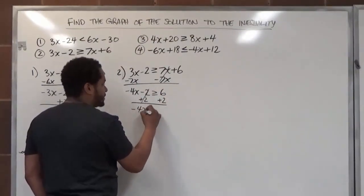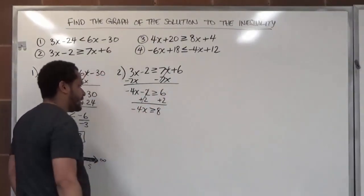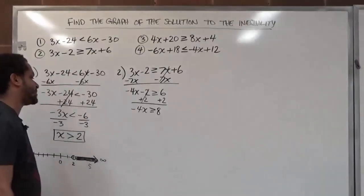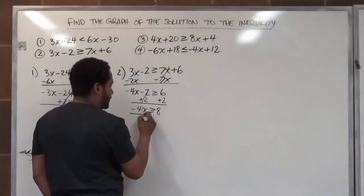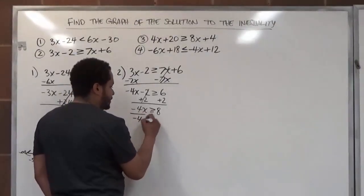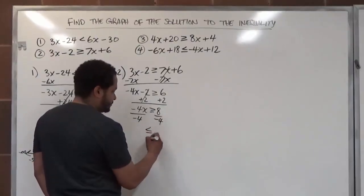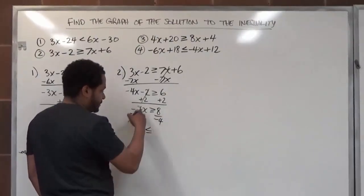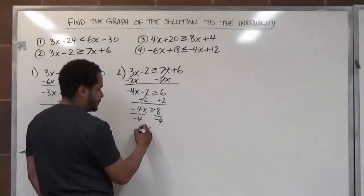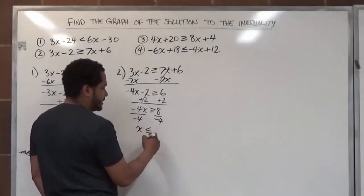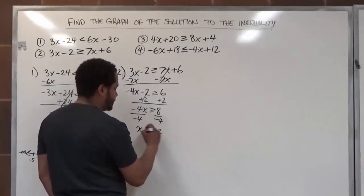The next step is to divide both sides by negative 4. Again, we're dividing by a negative term, so the arrow is going to change direction. Negative 4x divided by negative 4 is just x. And 8 divided by negative 4 is negative 2.